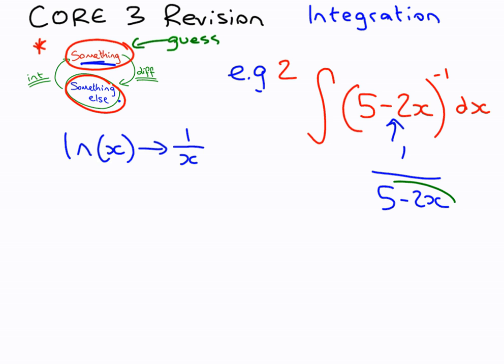So our guess is going to be ln of that. So let's guess ln should be the modulus, really, minus 2, 5 minus 2x. So let's differentiate this.